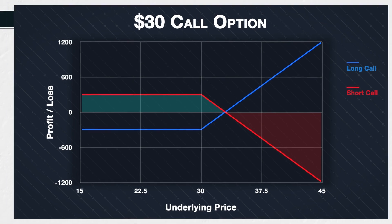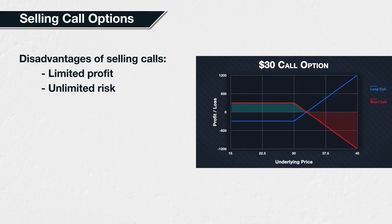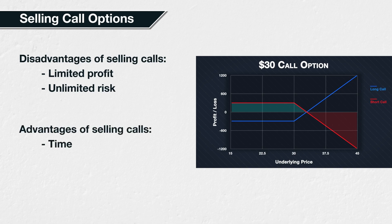As the call option seller's potential profit is capped but their potential loss is unlimited, you may be asking yourself why a trader would choose to sell a call option in the first place. Remember that there is an inherent time limit on an option. For the buyer of the call option, this represents a need for the underlying price to increase sufficiently before the expiry date, so time is against the buyer. For the seller, the passage of time helps them — every day that passes, the option will lose a little bit of its value. The more time that passes without the underlying price increasing, the more value the option will lose, and the more profit the call option seller will be making.